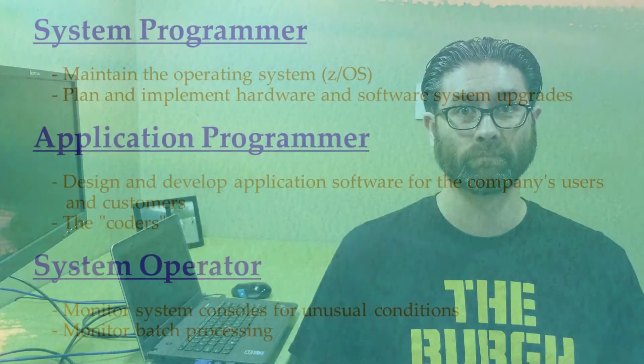Now that we've gotten past the myth that mainframes are dead, what kind of mainframe jobs are out there? My job happens to be that of a system programmer. The system programmer takes care of the operating system — ZOS in this case. They upgrade it and optimize it, plan and implement hardware and software system upgrades, automate operations, and are involved in day-to-day troubleshooting — helping app developers look up return codes or applying fixes to system software. Some mainframe shops also have system programmers who specialize in particular middleware products, such as CICS and DB2.